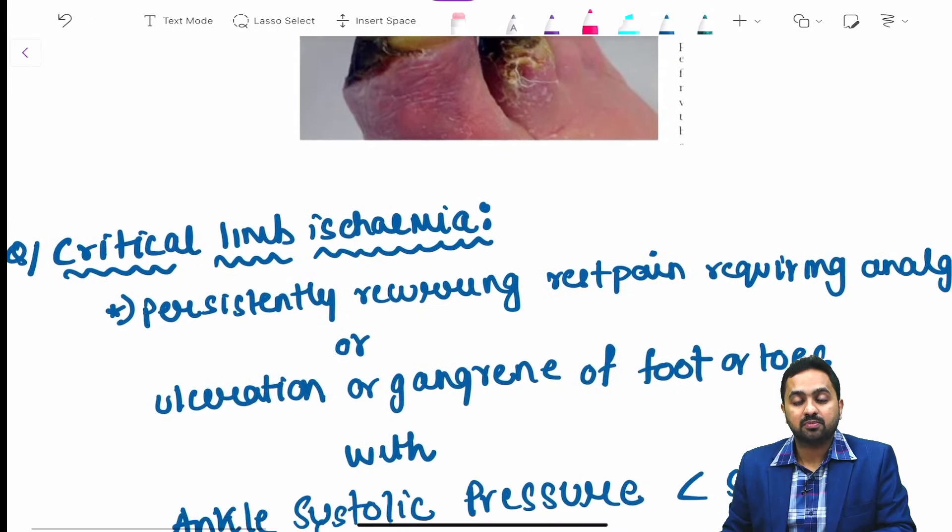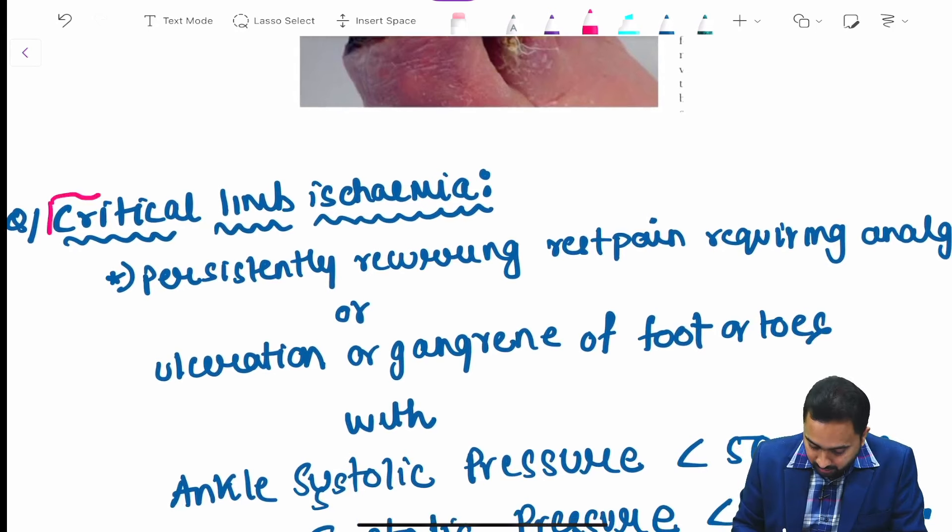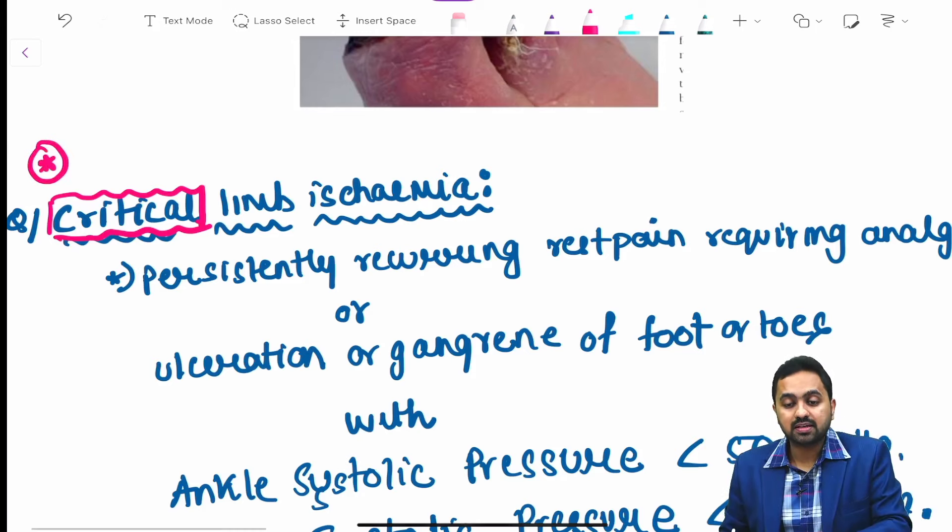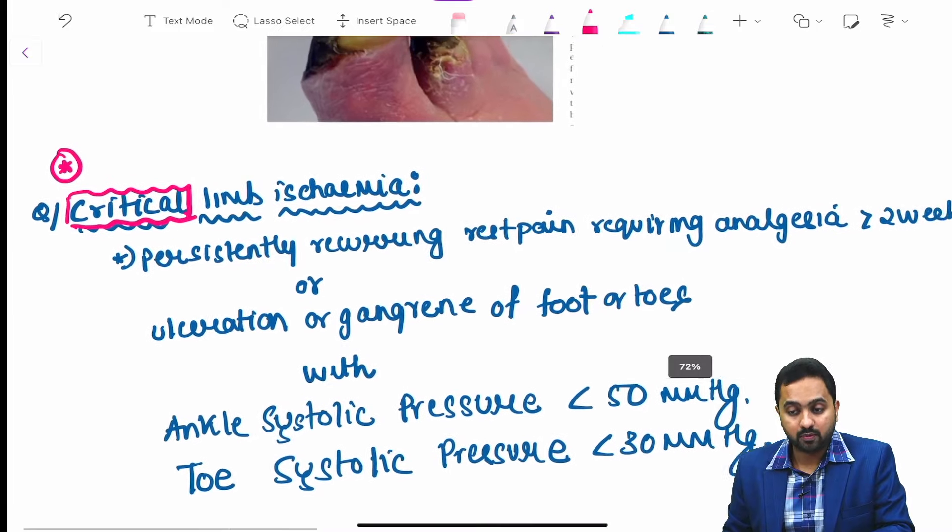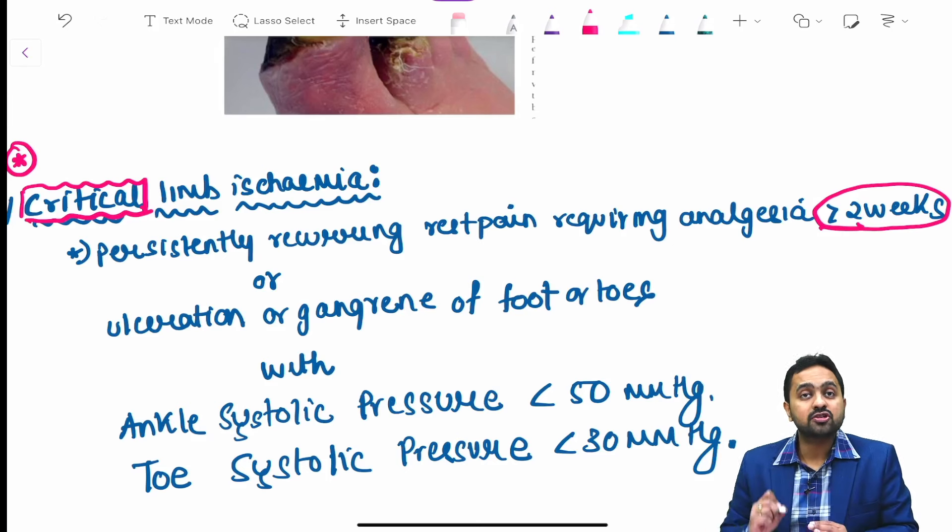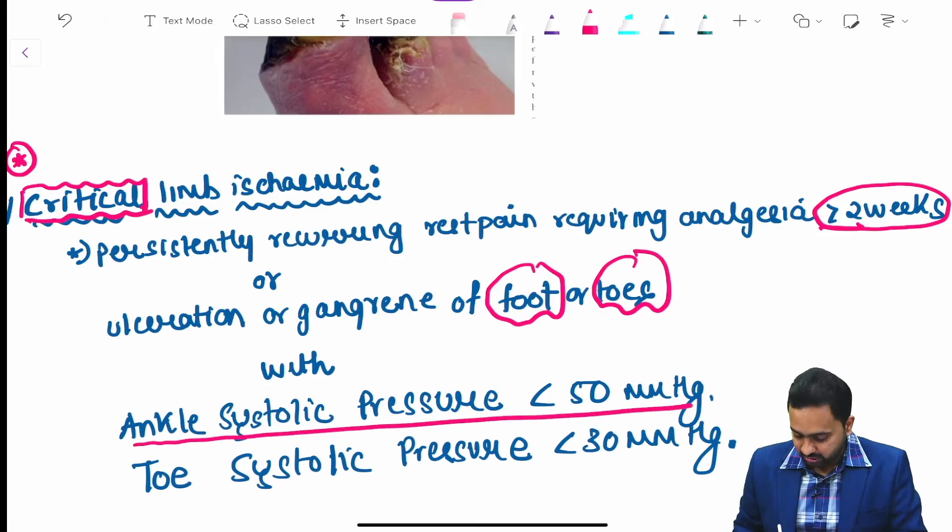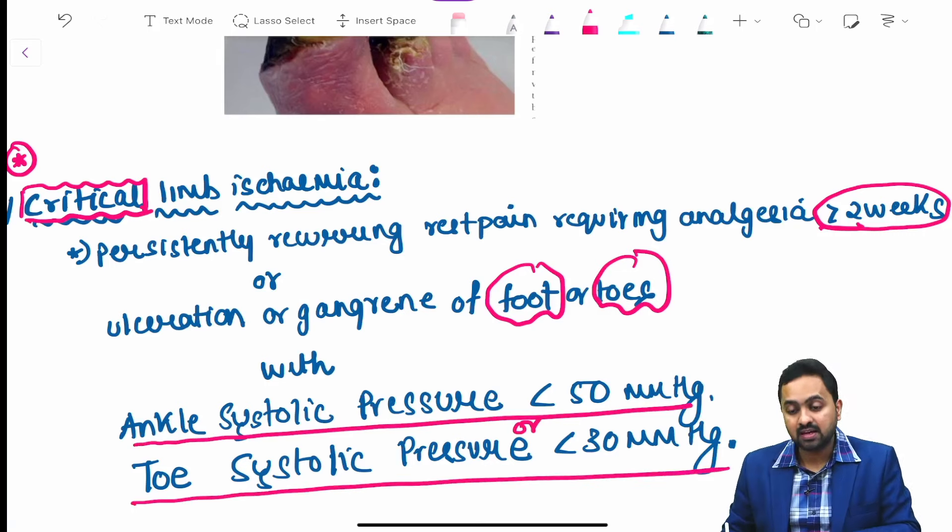The next concept is critical limb ischemia. Please look at this term - it is critical and not chronic. It is persistently recurring rest pain requiring analgesia for more than two weeks, or ulceration or gangrene of foot or toes, with an ankle systolic pressure less than 50 mmHg or toe systolic pressure less than 30 mmHg.